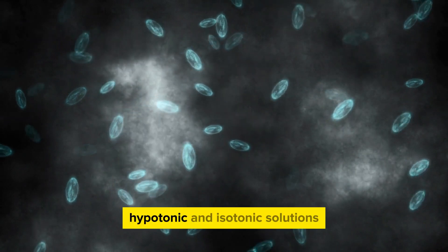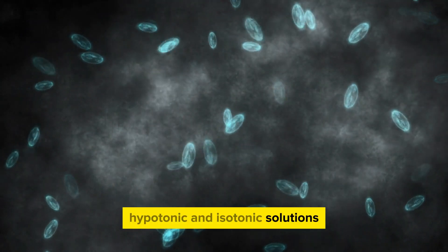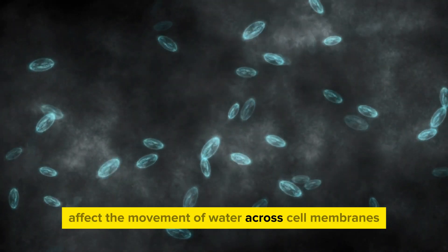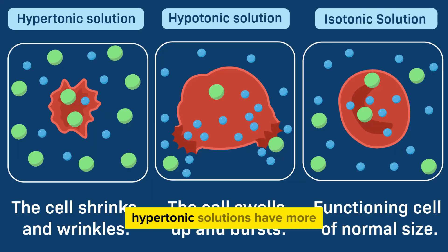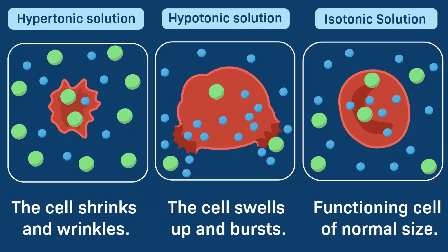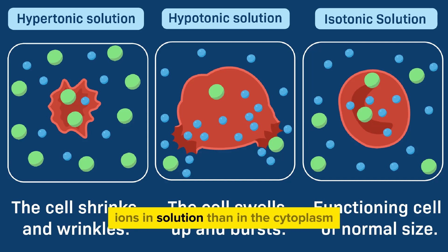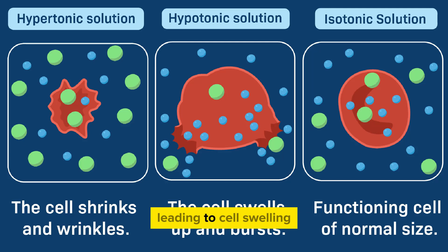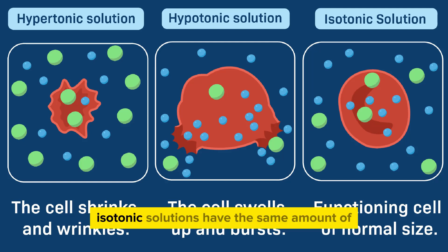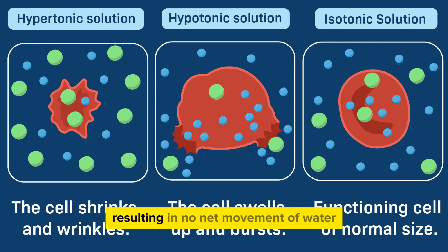How do hypertonic, hypotonic, and isotonic solutions affect the movement of water across cell membranes? Hypertonic solutions have more ions in solution than in the cytoplasm, causing water to move out of the cells, leading to cell shrinkage. Hypotonic solutions have fewer ions in solution than in the cytoplasm, causing water to move into the cells, leading to cell swelling. Isotonic solutions have the same amount of ions in solution and cytoplasm, resulting in no net movement of water across the cell membrane.